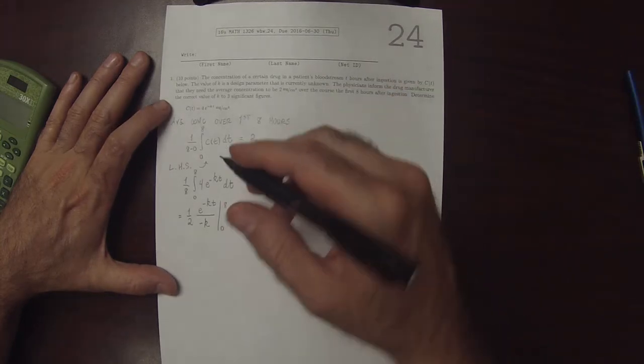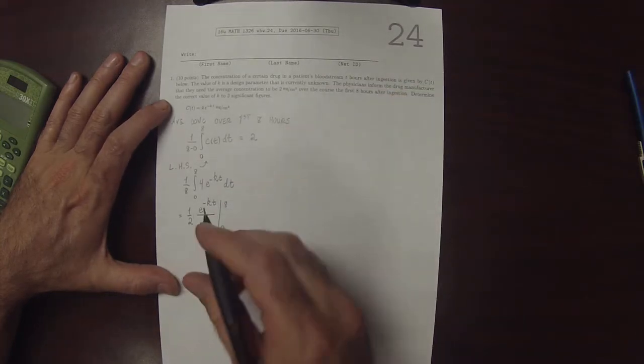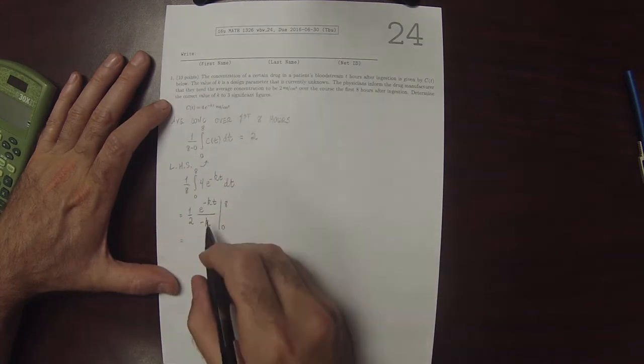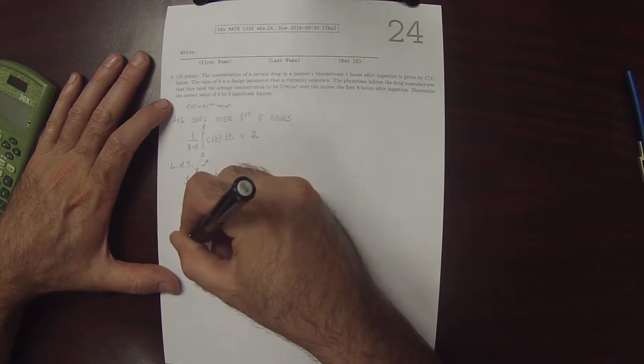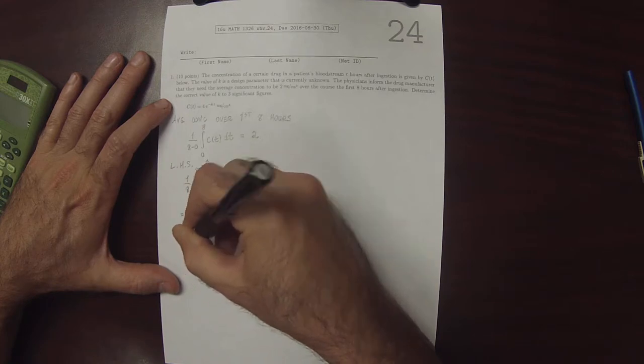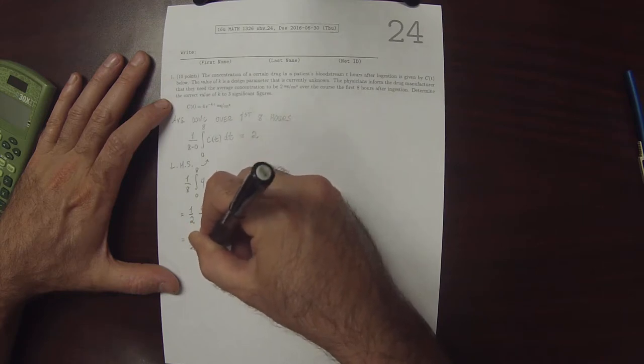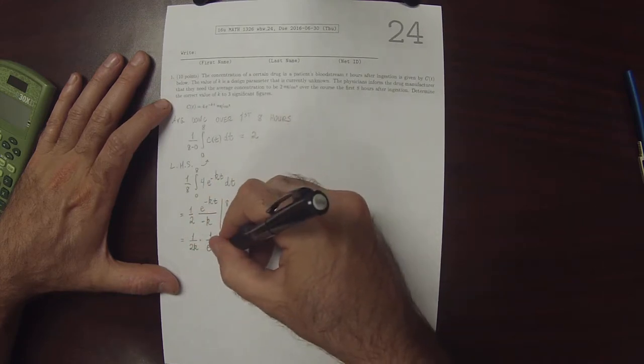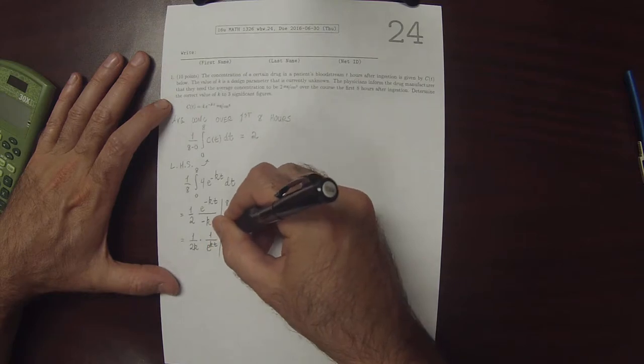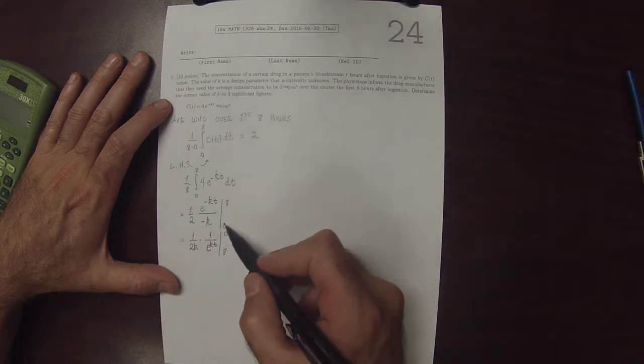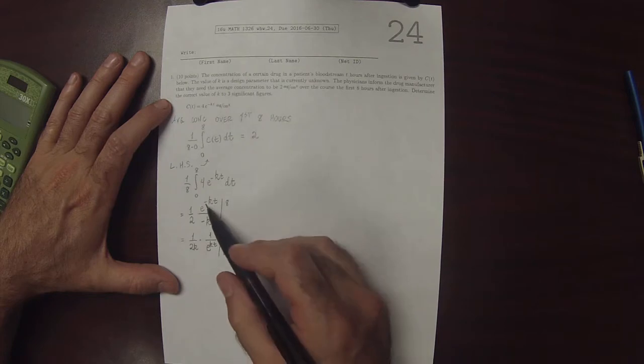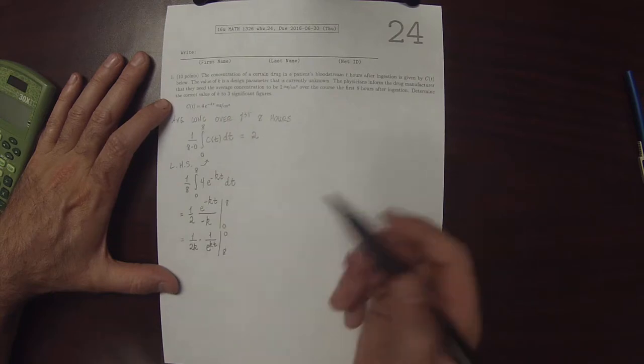So, I'll reorganize this just a little bit. I'll use this negative to change the order of evaluation. And I'll factor out the K. So this would be 1 over 2K. And then multiplied by 1 over e to Kt, evaluated from 8 to 0. So this negative, I use to change the order of evaluation from 0 to 8 to 8 to 0. And this negative, I use to put this factor in the denominator.